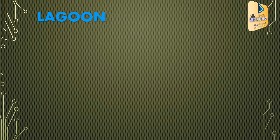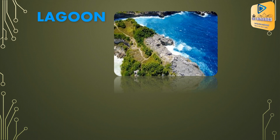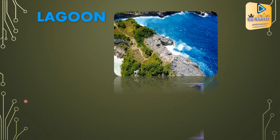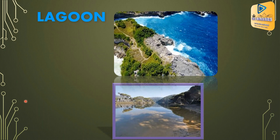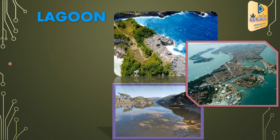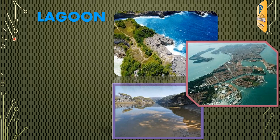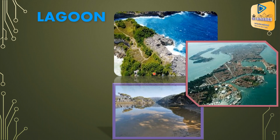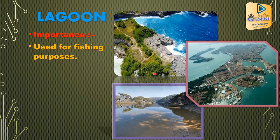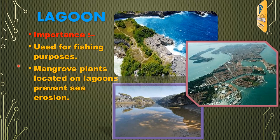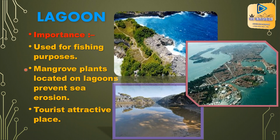A lagoon is a shallow body of brackish water permanently separated from the sea but connected with the sea at one time during the year. Examples of lagoons are Negombo Lagoon, Puttalam Lagoon, and Batticaloa Lagoon. The importance of lagoons: used for fishing purposes; mangrove plants located on lagoons prevent sea erosion; and they are tourist attractive places.